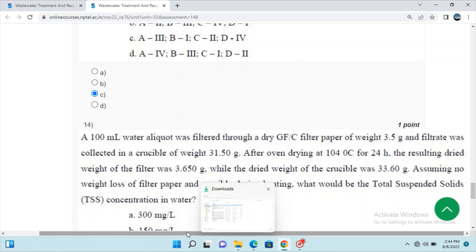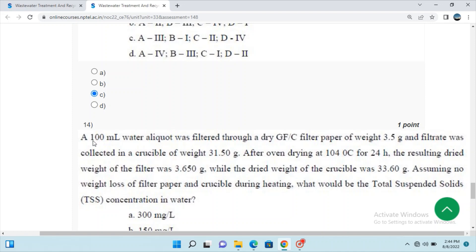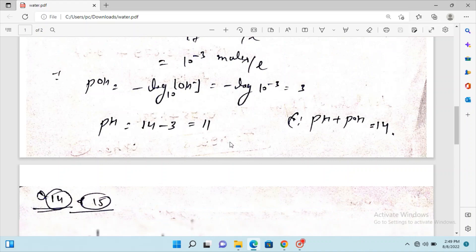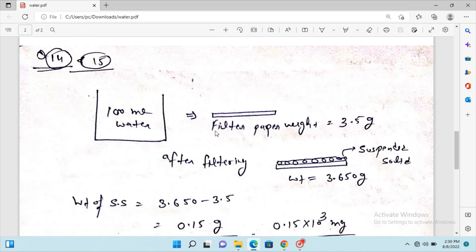Questions 14 and 15: A 100 ml water aliquot was filtered through a dry GFC filter paper of weight 3.5 grams, and the filtrate was collected in a crucible of weight 31.5 grams. After oven drying at 104°C for 24 hours, the resulting dried weight of the filter was 3.65 grams while the dried weight of the crucible was 33.6 grams. Assuming zero weight loss of filter paper and crucible during heating, what would be the total suspended solids concentration in water?